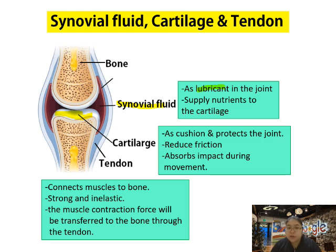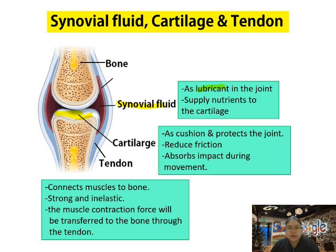Reducing friction prevents pain. Now for the tendon — its function is to connect muscle to bone. It is strong and inelastic. The muscle contraction force is transferred to the bone through the tendon. Those are the functions for the three structures: synovial fluid, cartilage, and tendon.